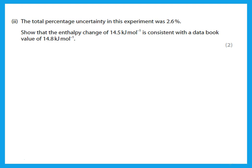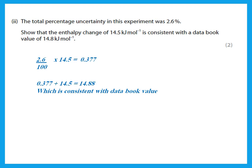The total percentage uncertainty in this experiment was 2.6%. To show that the calculated enthalpy change is consistent with the data book value of 14.8 kJ/mol, calculate 2.6% of the experimental value, add it to the value, and show that the result comes out to approximately the same number.